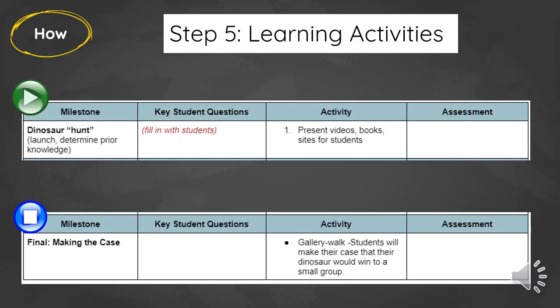On your backward planning template at the bottom, you'll see some milestones — another thing to plan for as you go along. Think especially about how you want to launch your unit to get students engaged and excited. In my case, we did a dinosaur hunt, which got them excited and helped me hear what they already knew about dinosaurs. The final milestone was 'making the case' — a gallery-walk-style event where students walk around and debate with another student to see which of their dinosaurs would win.